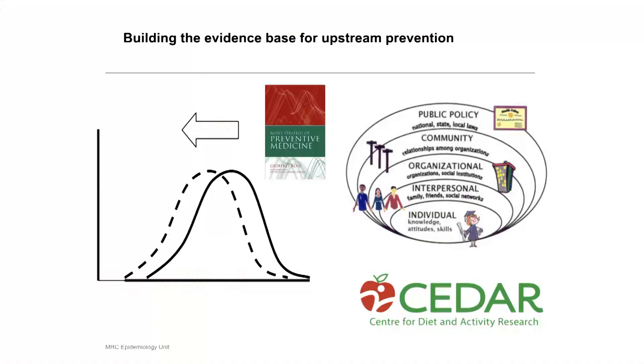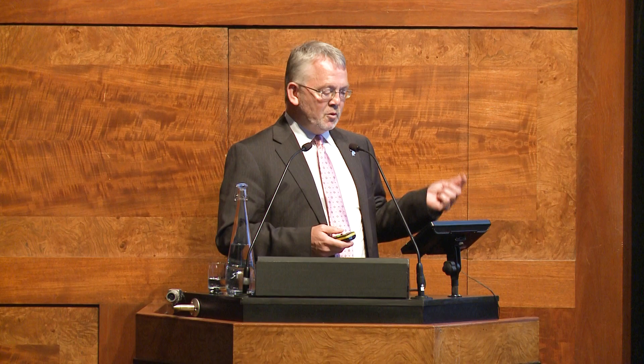Whatever we achieve in that is not the answer to the problem by itself — it's a contribution, but it needs to be complemented by other approaches. That other approach is to move really upstream and realise the vision that Geoffrey Rose put forward — that you achieve most not by aiming prevention at the small group at high risk, but at the whole population, making small but achievable changes in everybody. That means moving away from thinking about individuals and thinking about people in the context of a much broader sociological and ecological model.